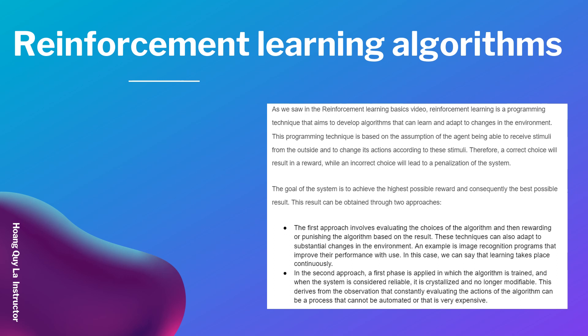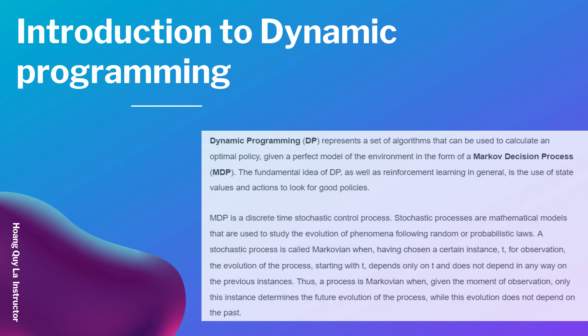This result can be obtained through two approaches. The first approach involves evaluating the choices of the algorithm and then rewarding or punishing the algorithm based on the result. These techniques can also adapt to substantial changes in the environment — an example is image recognition programs that improve their performance with use, so learning takes place continuously. In the second approach, a first phase is applied in which the algorithm is trained, and when the system is considered reliable it is crystallized and no longer modifiable. This derives from the observation that constantly evaluating the actions of the algorithm can be a process that cannot be automated and is very expensive.